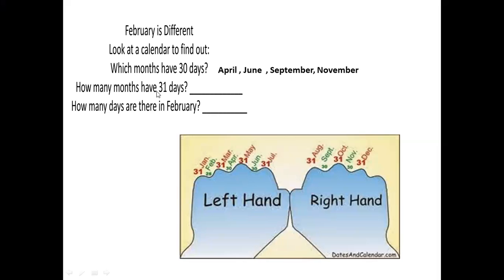Now, how many months have 31 days? 31 days, the upper side, right? Upper one like a mountain. So, here we have January, March, May, July, August, October and December. So, how many months, children? Let's count. One, two, three, four, five, six and seven months have 31 days.